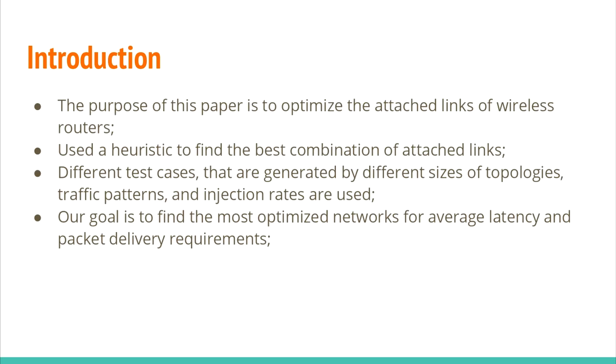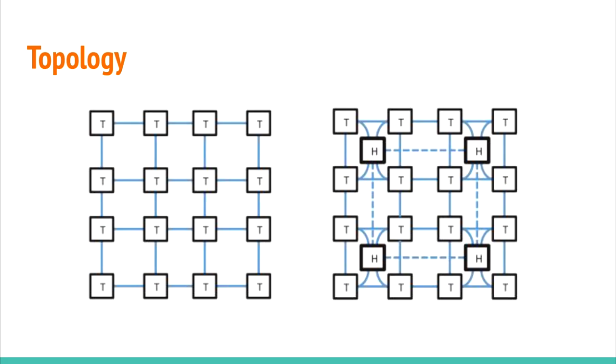This paper proposes an optimizer of the attached links of wireless routers in a hybrid network. The attached links are the links interconnecting the normal routers to wireless routers. We use a genetic algorithm to find the best configuration of the attached links. Different test cases are made, including different topology sizes, traffic patterns and injection rates. Our goal is to find the most optimized networks for average latency and packet delivery requirements.